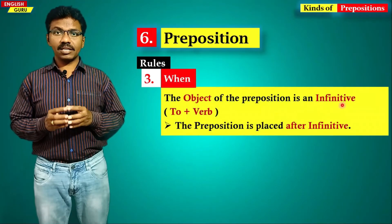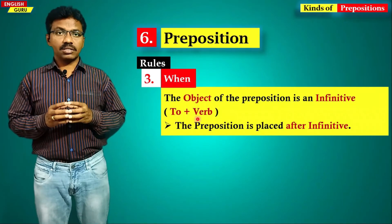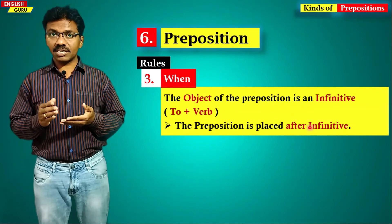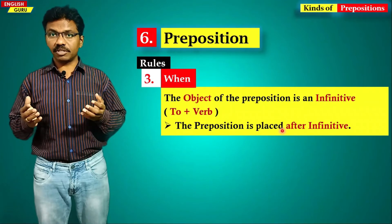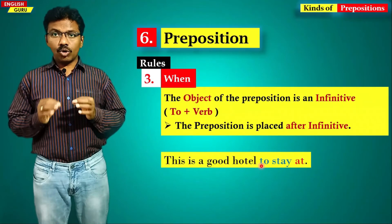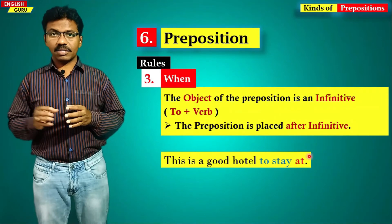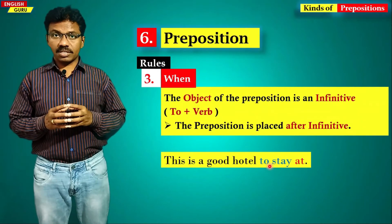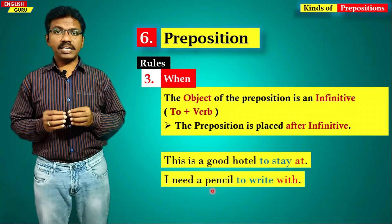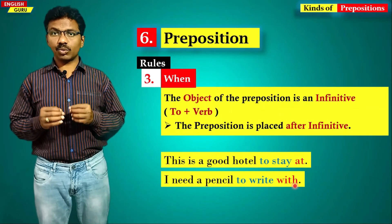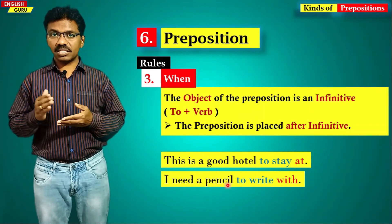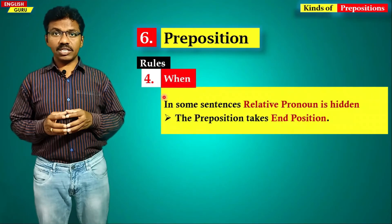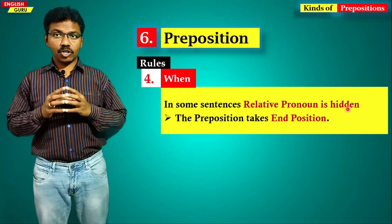The third rule is when the object of the preposition is an infinitive — that is, a 'to' infinitive — the preposition takes the end position, meaning it is placed after the 'to' infinitive verb. For example, 'this is a good hotel to stay at' — 'at' is placed at the end and 'to stay' is the infinitive. Another example: 'I need a pencil to write with' — 'with' is a preposition placed at the end and 'to write' is the infinitive.